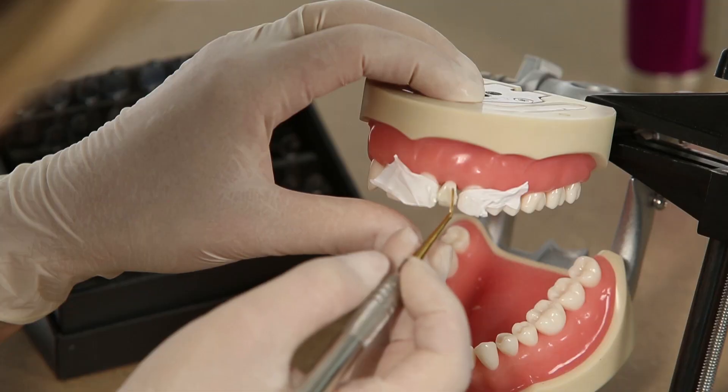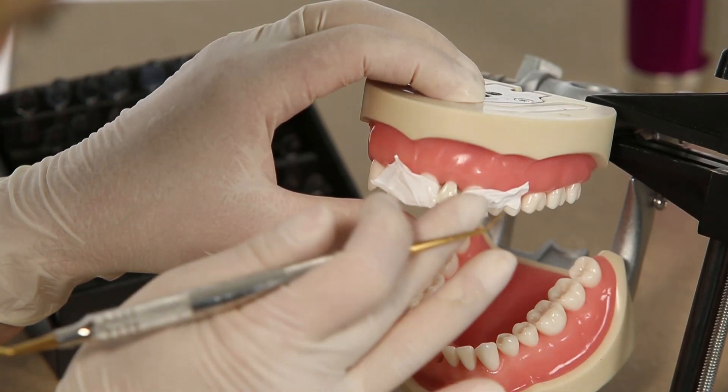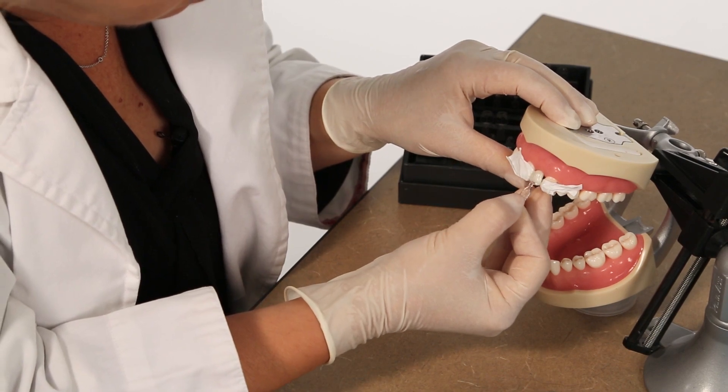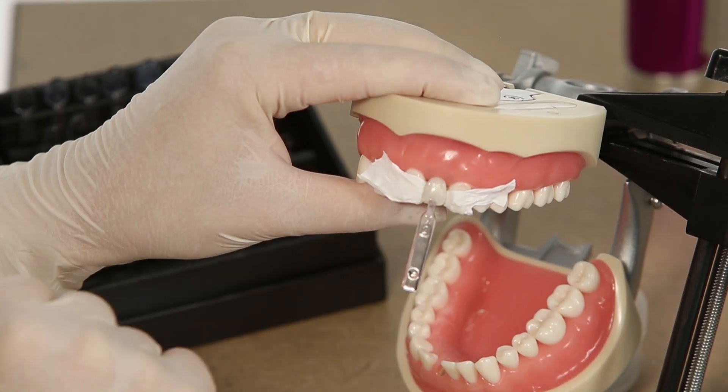Apply composite to the tooth and fill in the gap. Once the desired shape is achieved, press the Uveneer template onto the composite.